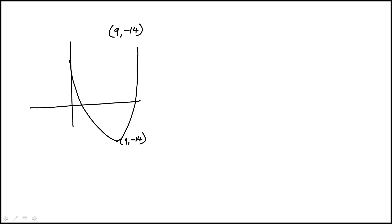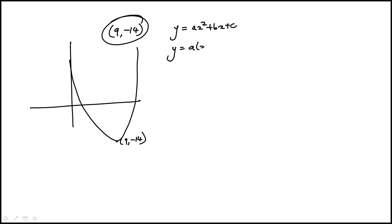We're given the general equation as ax² + bx + c, but we can also use the vertex form to write a(x - 9)² - 14. Expanding this can tell us what b and c are in terms of a.